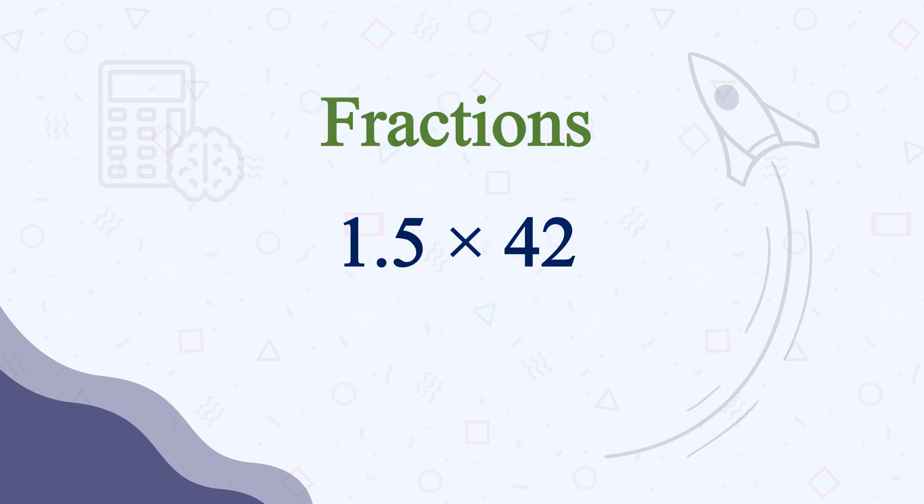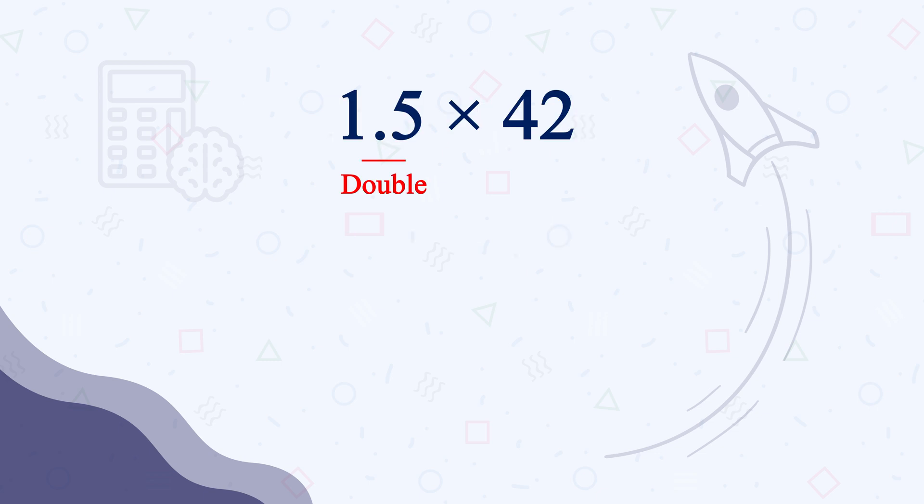Now moving to fractions: 1.5 times 42. We will double the one carrying 5 at the end. Double of 1.5 is 3. So now we need to half the other one. Half of 42 is 21, so 3 times 21 is 60 plus 3, or 63. So 1.5 times 42 is 63, very easy right?